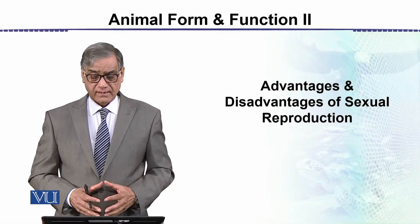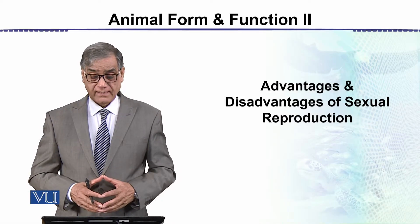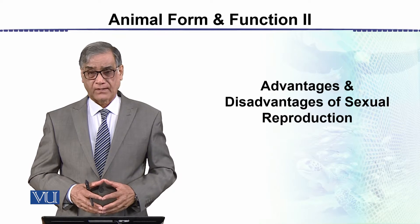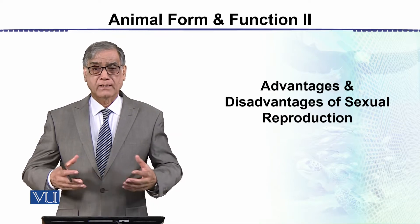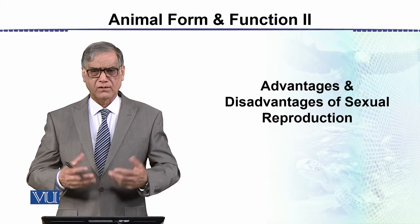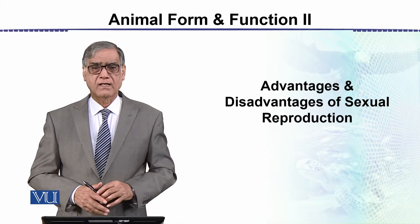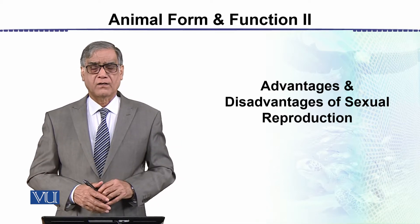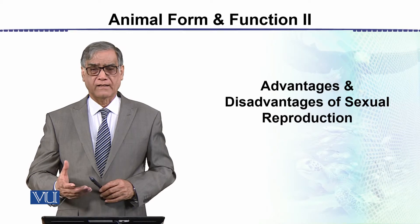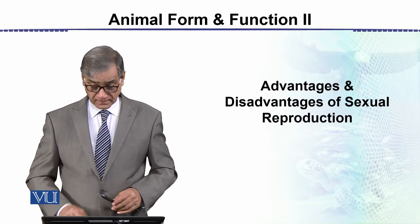The next topic is advantages and disadvantages of sex for reproduction. We have seen how sexual reproduction involves a union of sperms and eggs, producing a diploid individual or zygote, which is then developed as an individual.